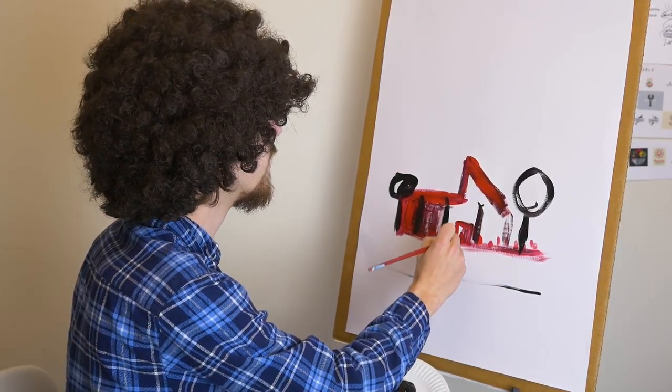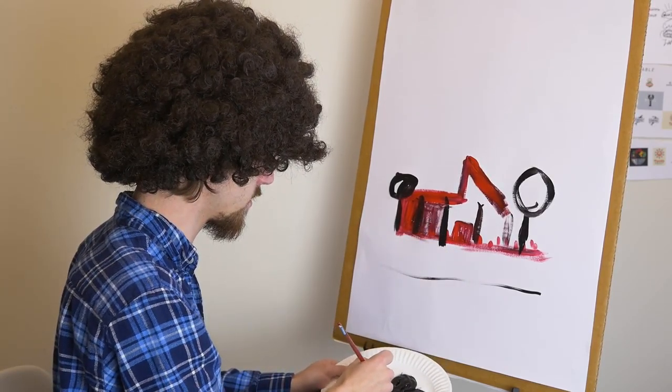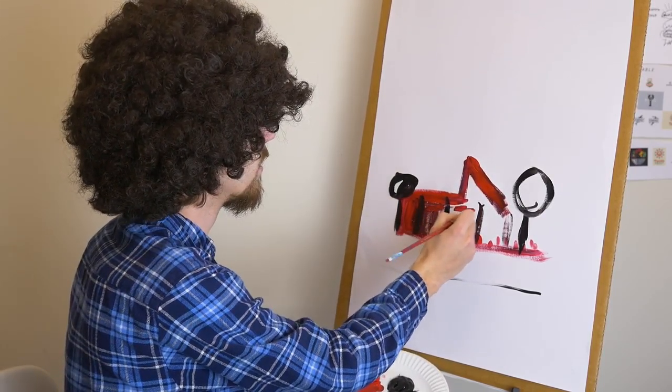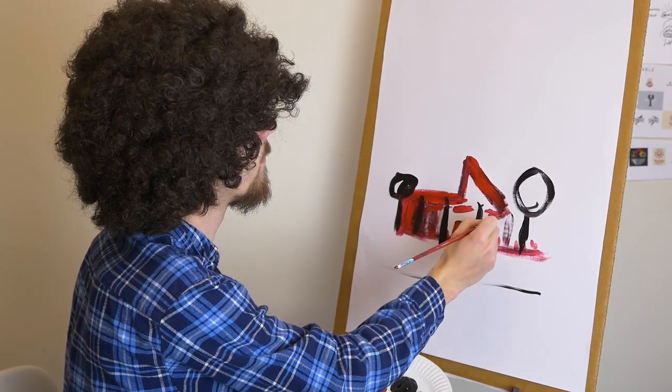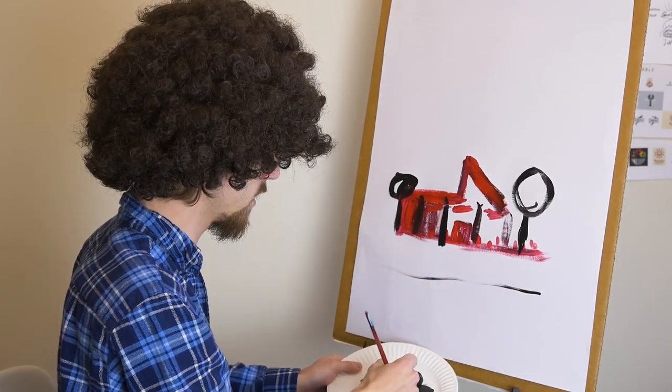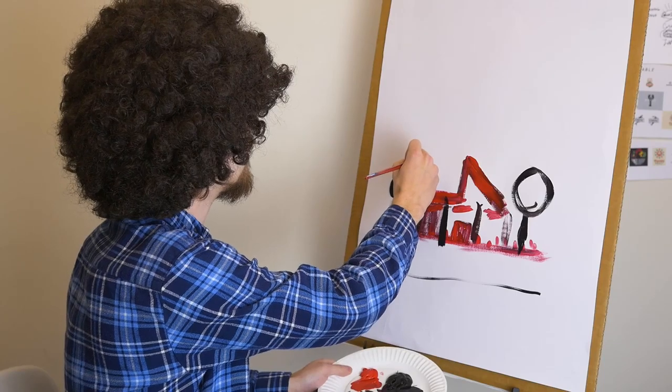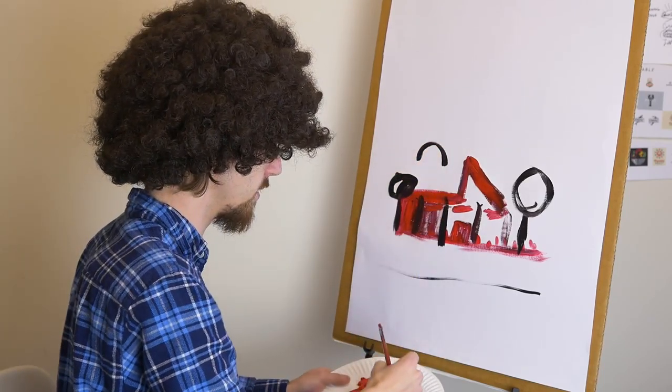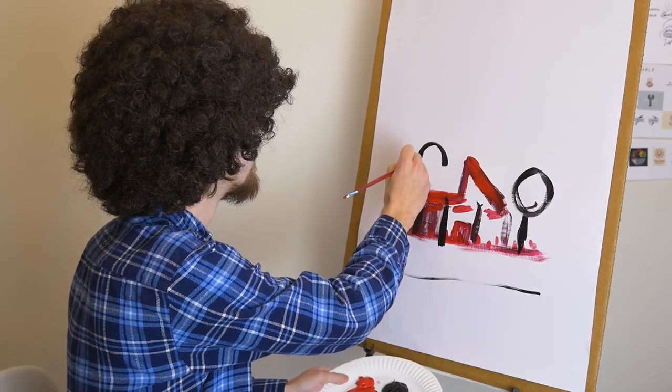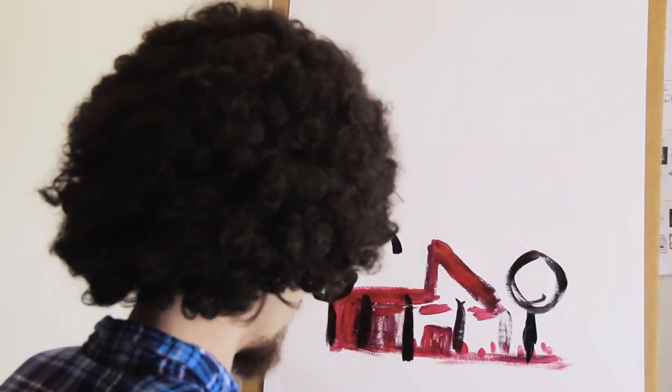Let's add some detail to the Cirque. Here are the columns that line the Cirque. Wow. Don't forget the doors. Here's a door. Then we'll do the windows across the top.